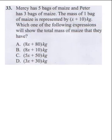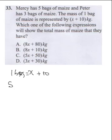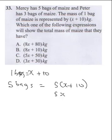Mercy has 5 bags of maize and Peter has 3 bags of maize. The mass of 1 bag of maize is represented by x plus 10 grams. Which expression shows the total mass of maize they have? One bag equals x plus 10. Mercy's 5 bags equals 5 times (x plus 10).